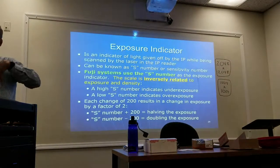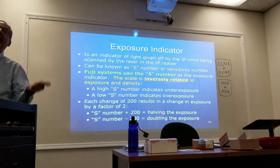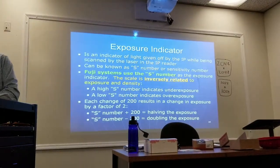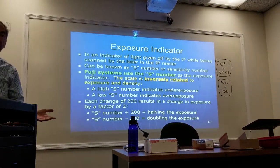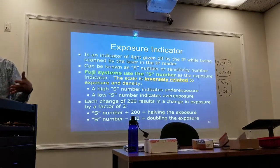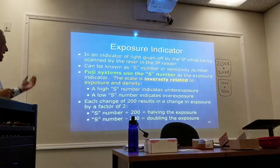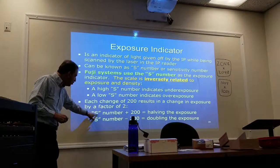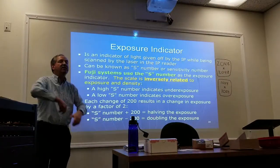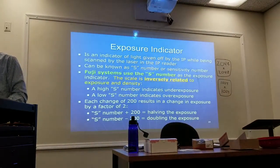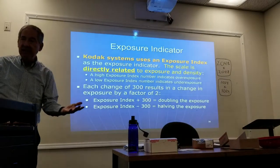For exposure indicators: Fuji uses the S-number, and the scale is inversely related to exposure density. A high S-number represents underexposure; a low S-number indicates overexposure. When you change the S-number by 200, it changes the exposure by a factor of two — adding 200 cuts the exposure in half, subtracting 200 doubles it.